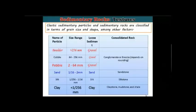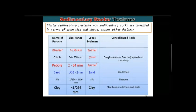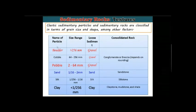Let's talk about sedimentary texture. Texture means the size, shape, and arrangement of the grains in a rock. For the mechanically formed clastic sediments, particle size classification is as follows: boulder — diameter greater than 256 mm; cobble — 64 to 256 mm; pebble — 2 to 64 mm. All of these are collectively called gravel.